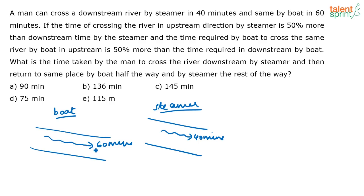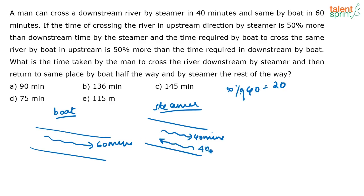Looking at the steamer: if you are going upstream, the time for crossing upstream is 50% more than the downstream time. So in what time will the steamer go upstream? 50% more than 40 minutes. 50% of 40 is 20 — that is half of 40. So the time taken by the steamer to go upstream is 40 plus 20, which is 60 minutes.